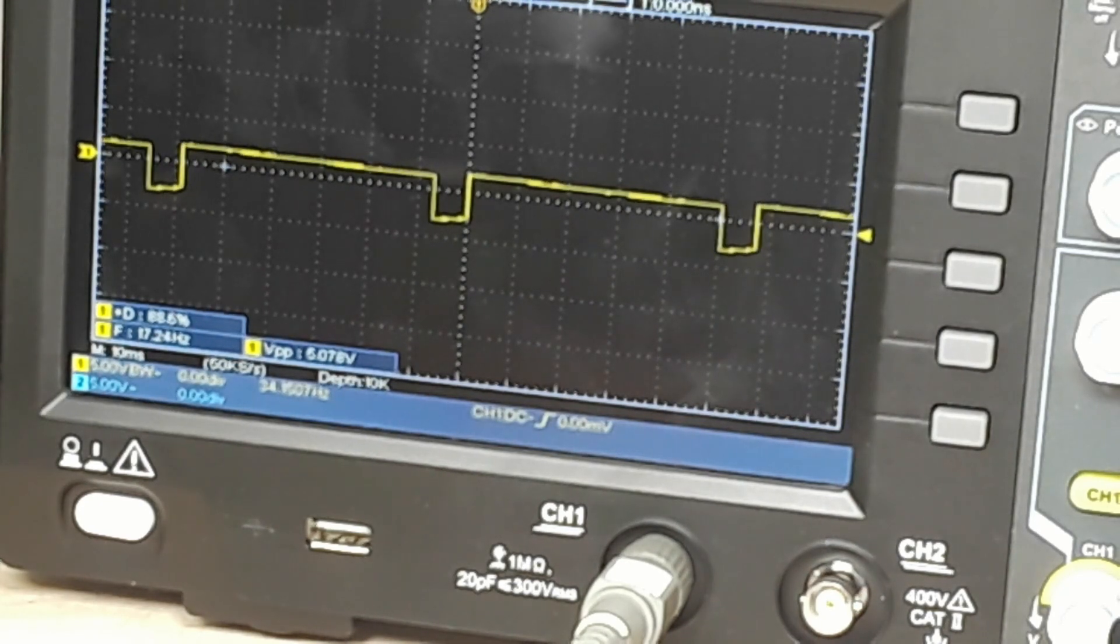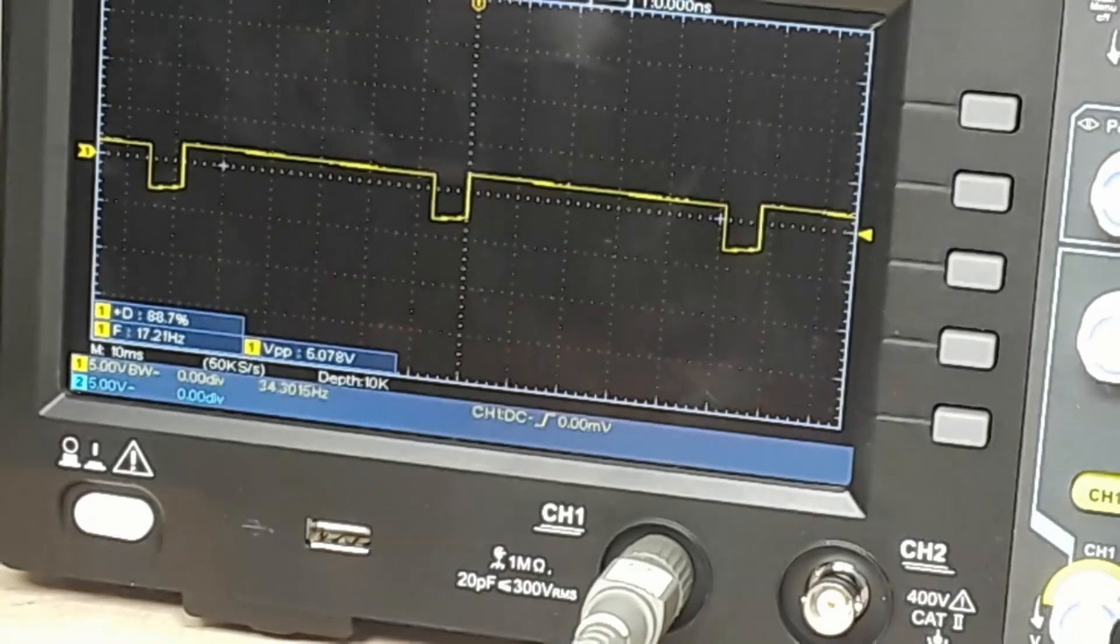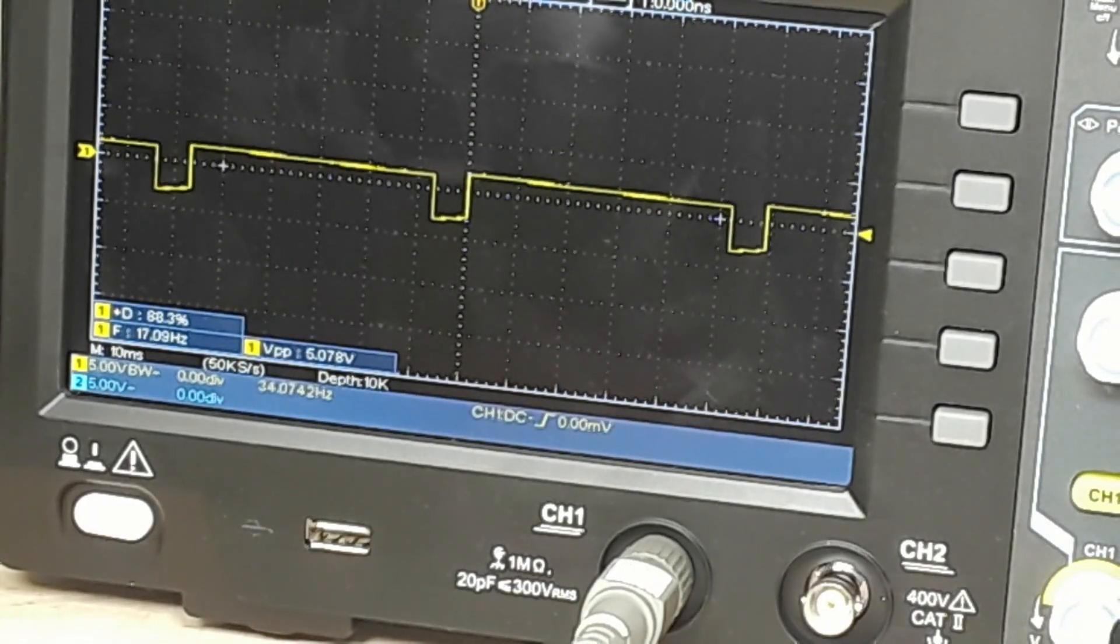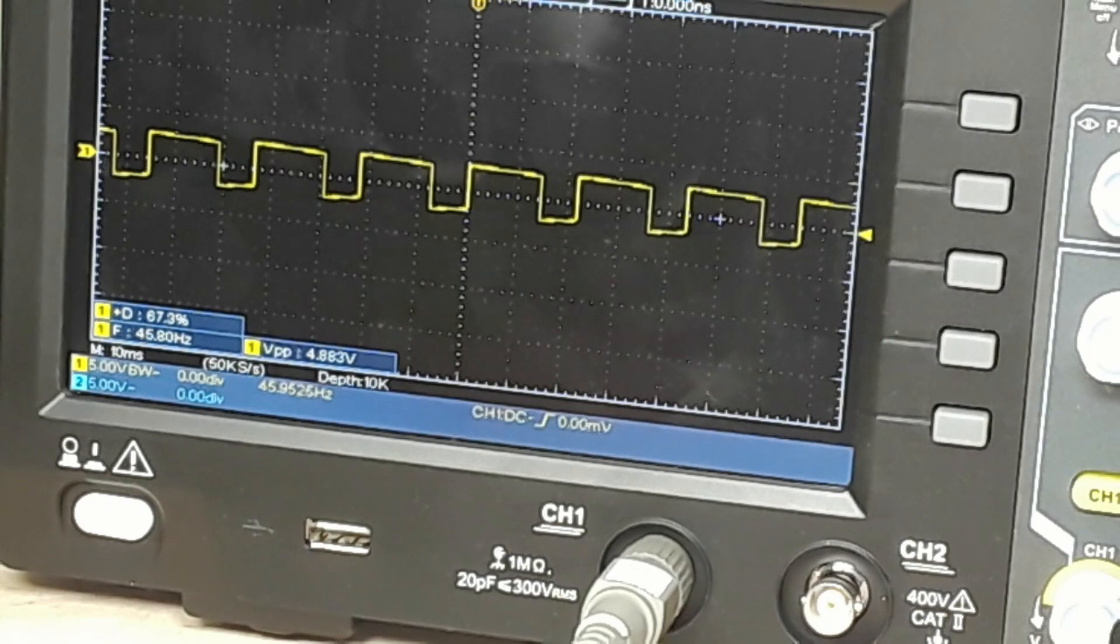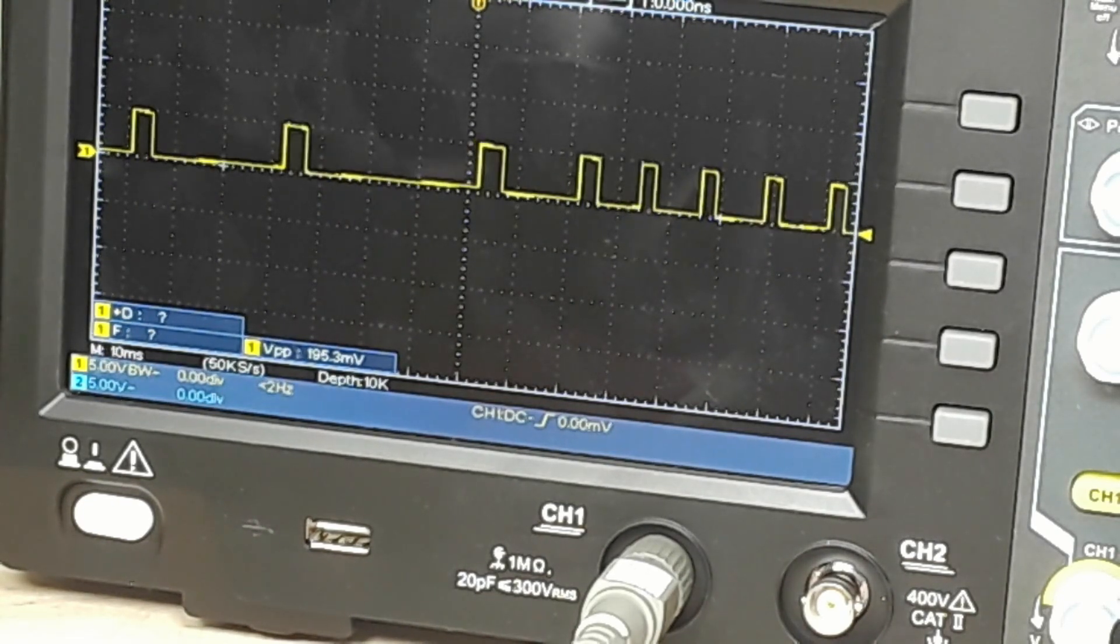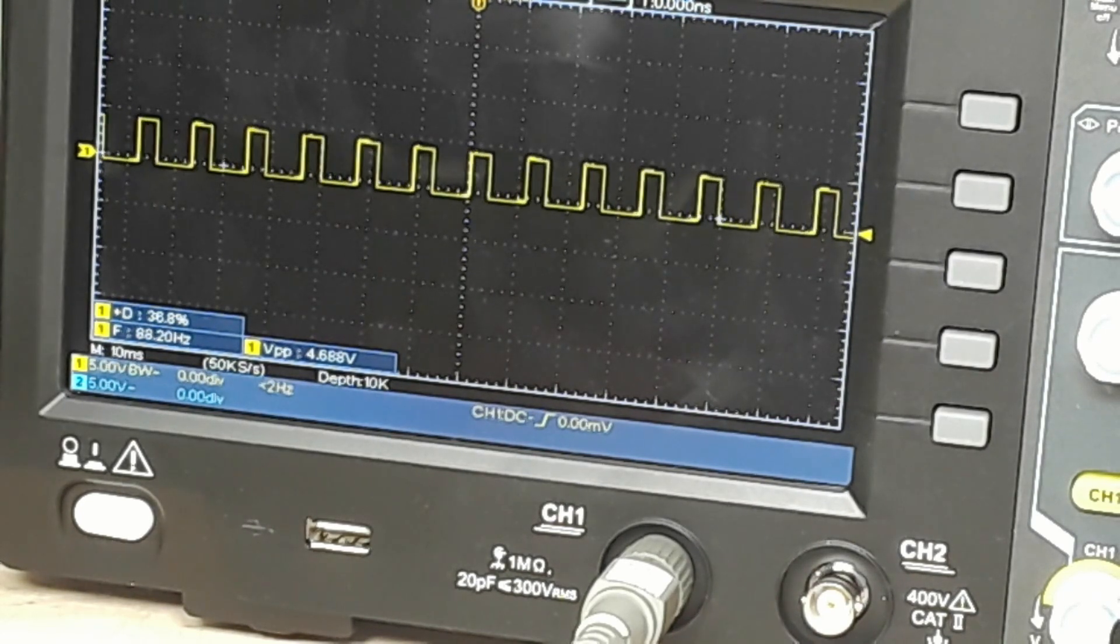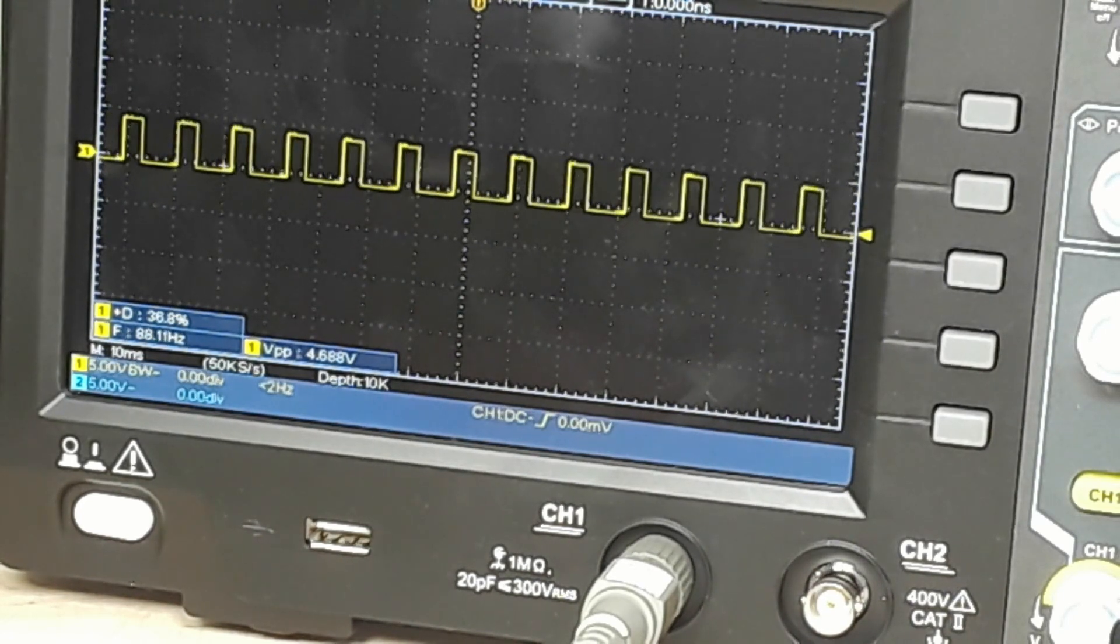Now we've changed our duty cycle to 90 percent and our frequency to 17 hertz. And bring it back down. And the same thing happens if we go the other way. We can change our duty cycle to about 35 percent and we are at 80 hertz.